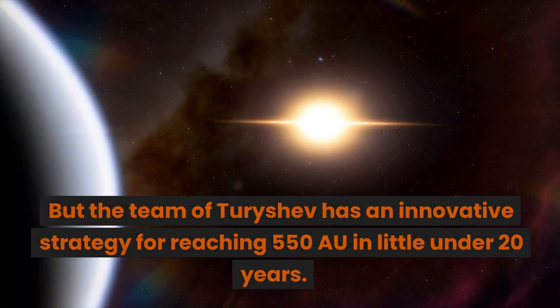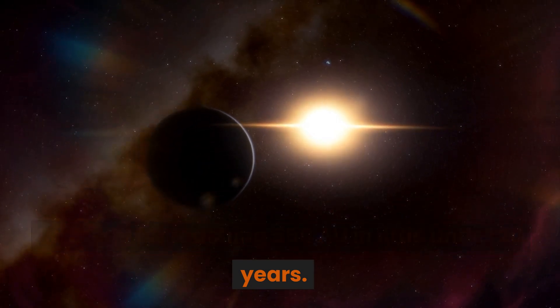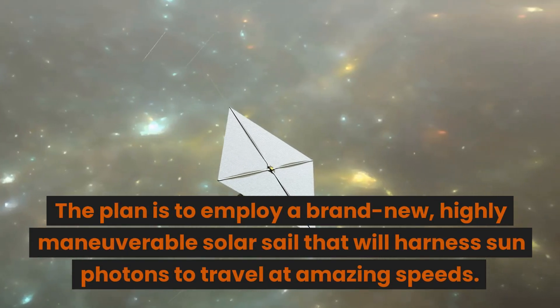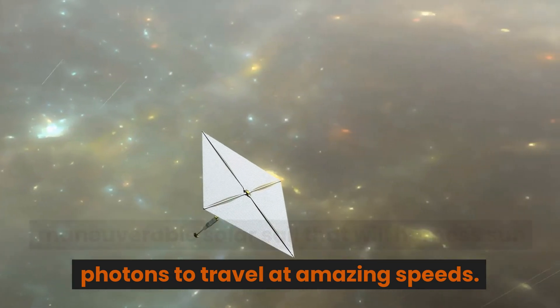But the team of Turishev has an innovative strategy for reaching 550 astronomical units in little under 20 years. The plan is to employ a brand new, highly maneuverable solar sail that will harness sun photons to travel at amazing speeds.